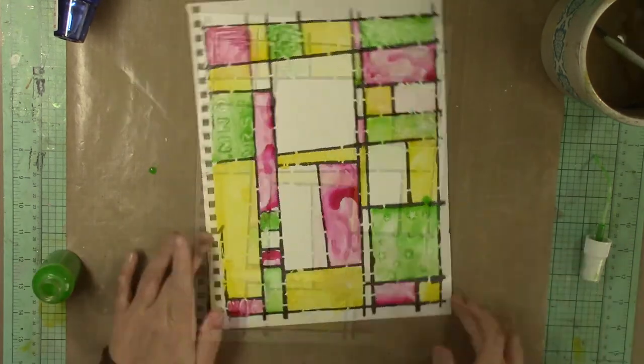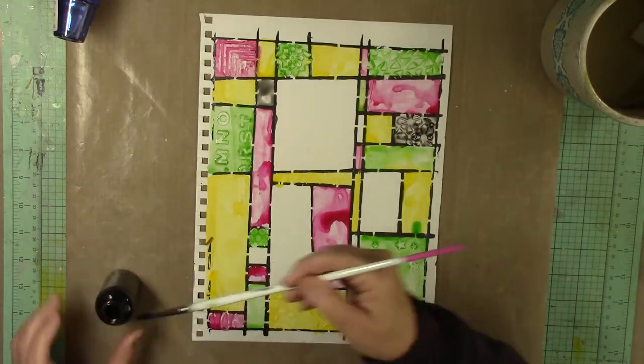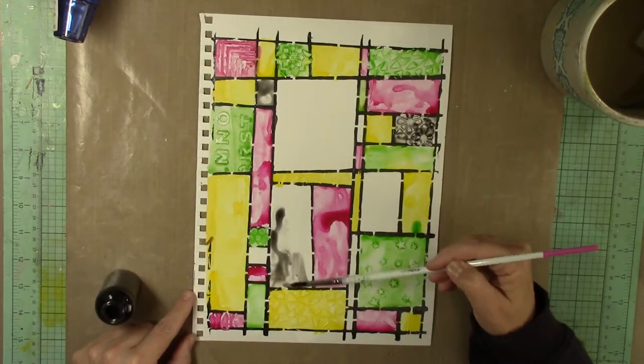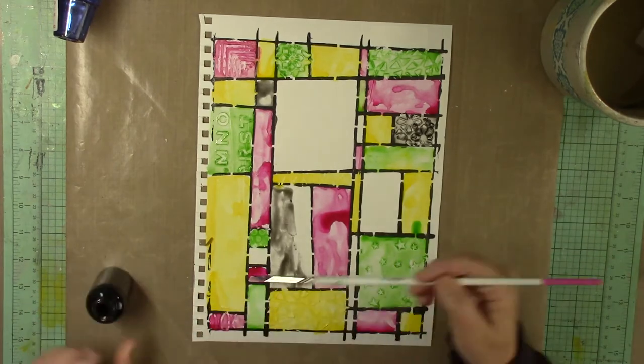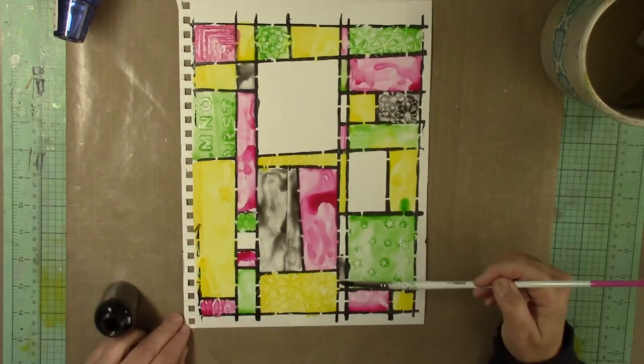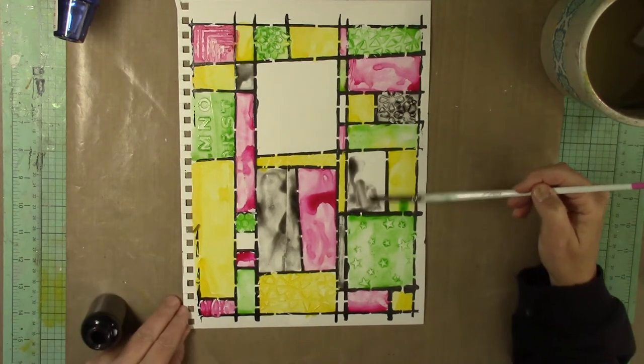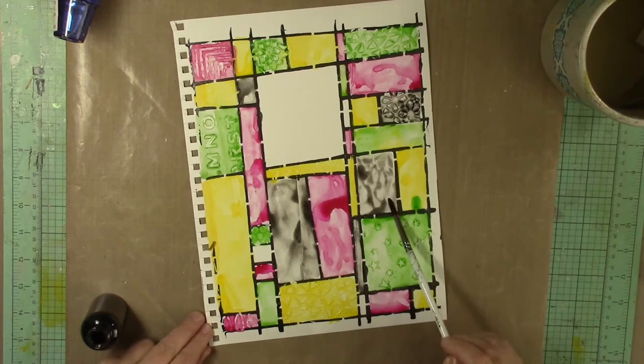I'm finishing off with that and then I use some black as well. Just kind of grounds it in. I'm not using black as one of the main colors, but just grounding the entire page together with the black. I leave some squares white—the main one where my journal words are going to go. I left some other ones where I'm going to add some doodling into it.